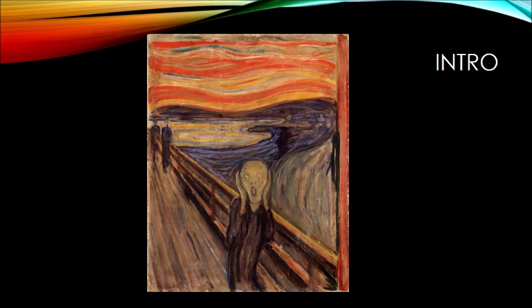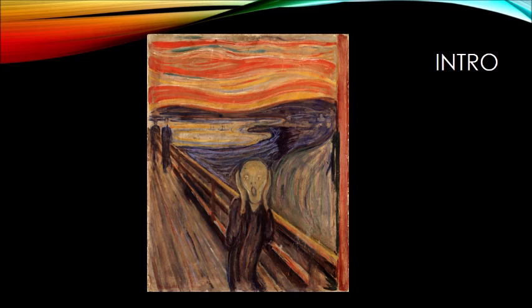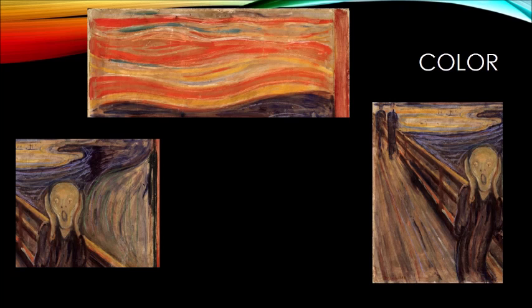Now I'm going to talk about color, and I'm pretty excited about this because I love color. The first thing you notice right off the bat is the background colors. It creates a feeling that it's about to go nighttime — that it's the sunset. And this could be indicating that once nightfall happens, something bad is about to happen through this color.